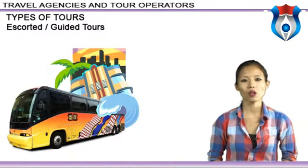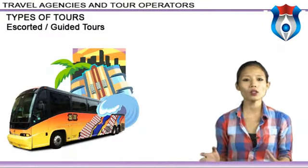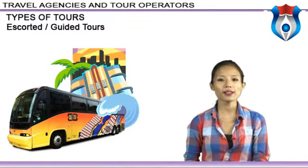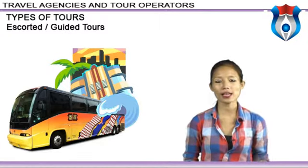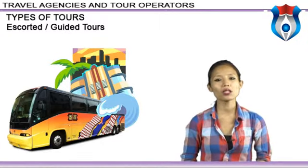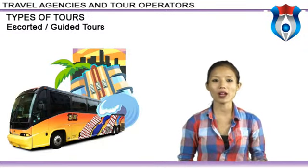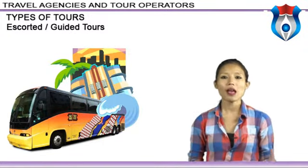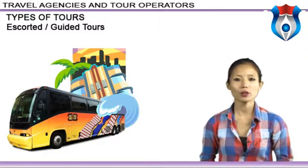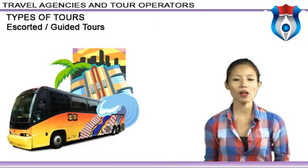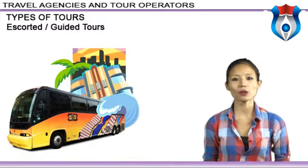On an escorted tour, the tour operator plans the itinerary and provides a guide who accompanies travelers to each sightseeing destination. The tour price usually includes most expenses, but travelers may be asked to pay separately for certain items such as souvenirs, alcoholic beverages, side trips such as a round of golf, and meals eaten during free time.